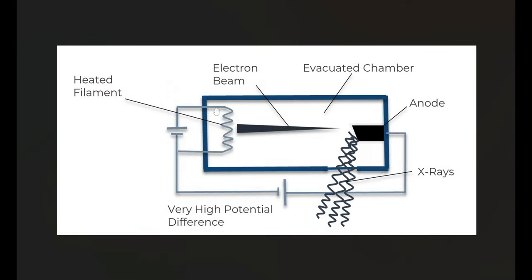In our x-ray tube, we have our filament. The heated filament is going to boil off electrons. When the electrons are created, if the filament is held at a negative charge and the anode on this side is held at a positive charge, the electrons will flow from the cathode towards the anode. Once they strike the anode, they will create x-rays. The interaction of the electrons with the anode will create two kinds of x-rays: bremsstrahlung x-rays and characteristic x-rays.